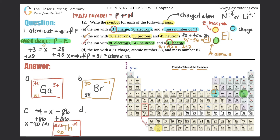Part D: an ion with a plus two charge, an atomic number of 38, and a mass number of 87. They gave us all the key information. Atomic number 38 gives us strontium — symbol Sr. The 38 goes on the bottom-left, 87 on the top-left, and plus two in the top-right. That is your answer to D.